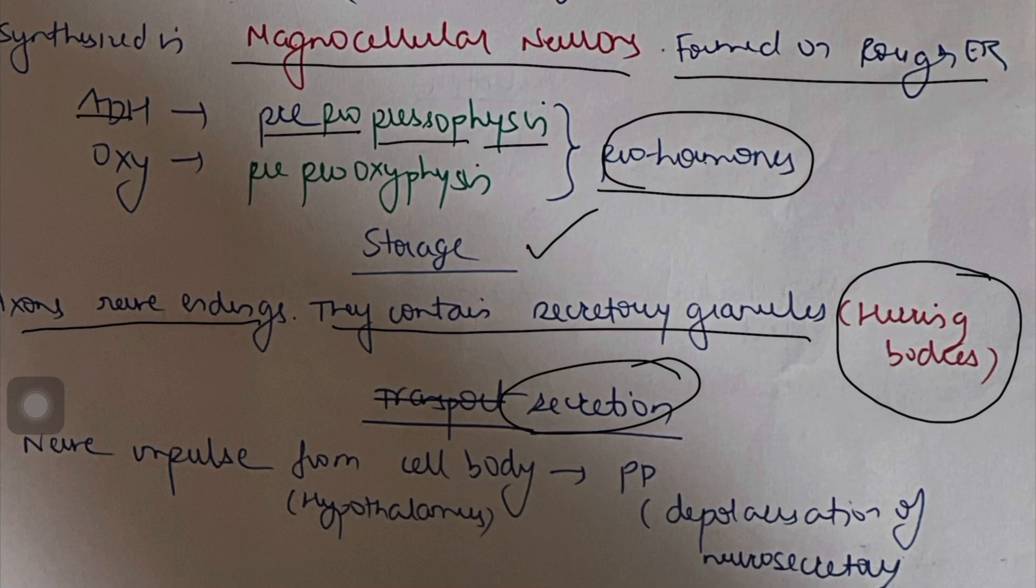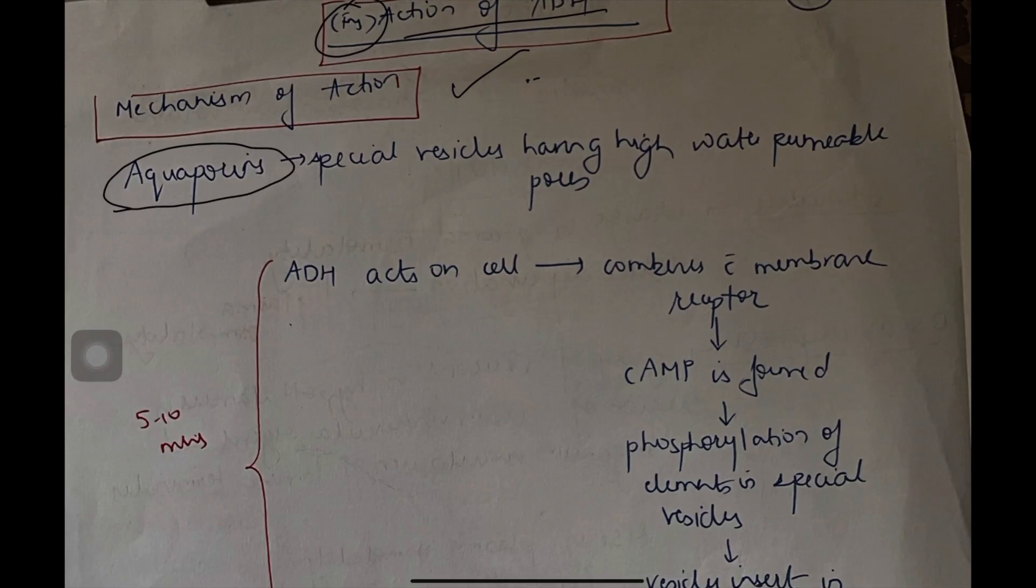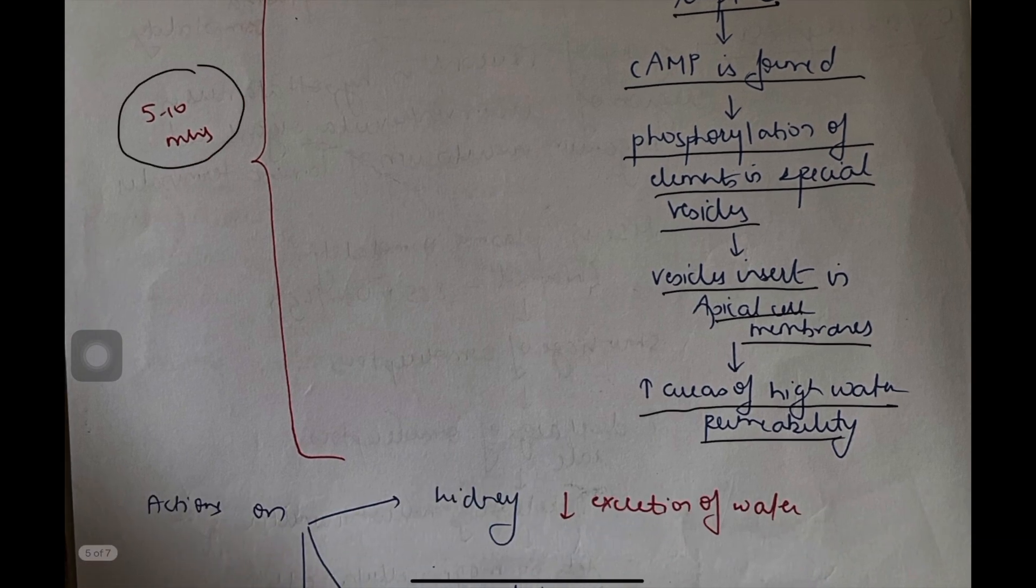Secretion: nerve impulses from the cell body come to the hypothalamus. From the hypothalamus, there is depolarization of the neurosecretory vesicles and ultimately secretion of the hormone. They are special vesicles having a high water permeable pore. ADH acts on the cell. It combines with the membrane receptor. cAMP, which is the second messenger, is formed. Because of that, there is phosphorylation of elements in the special vesicles. The vesicles are inserted in the apical cell membrane. This increases areas of high water permeability. This entire process occurs in 5 to 10 minutes.